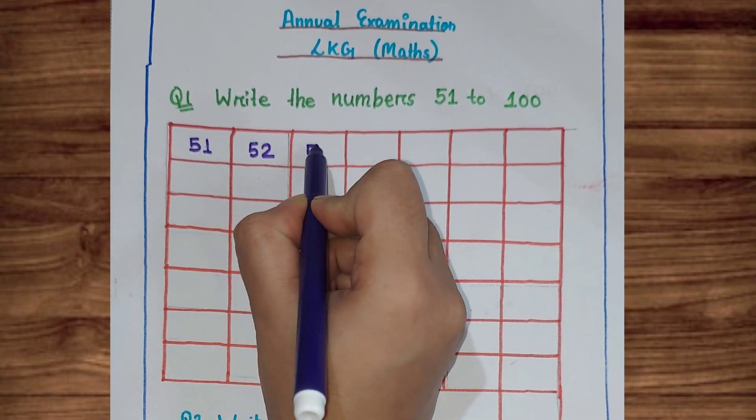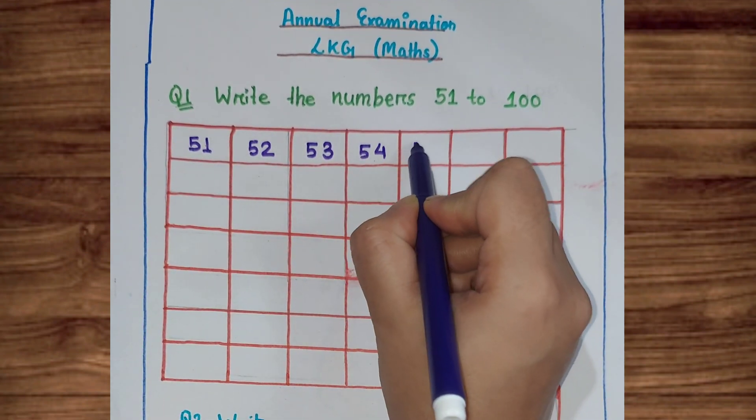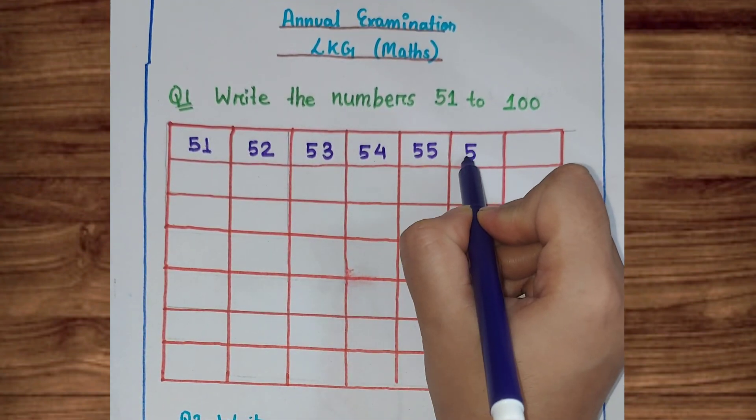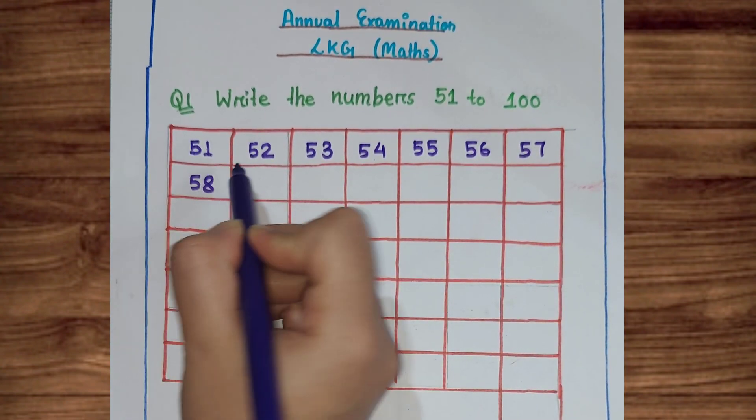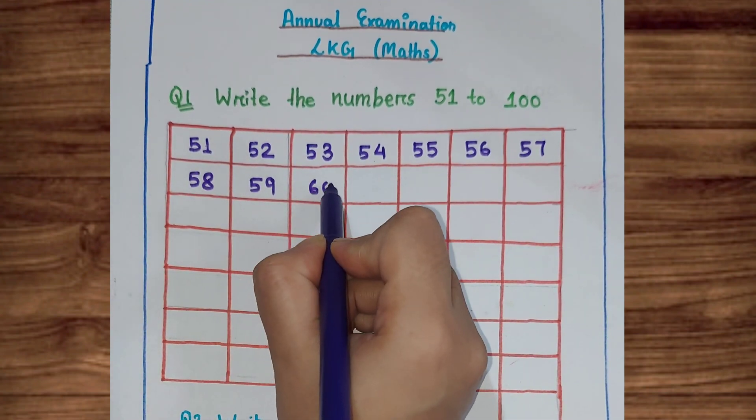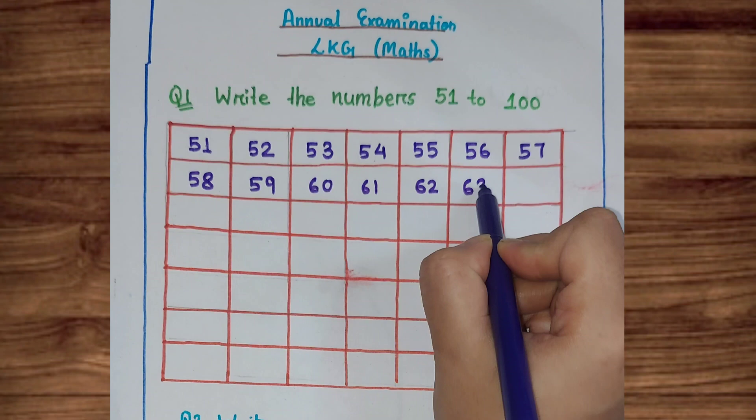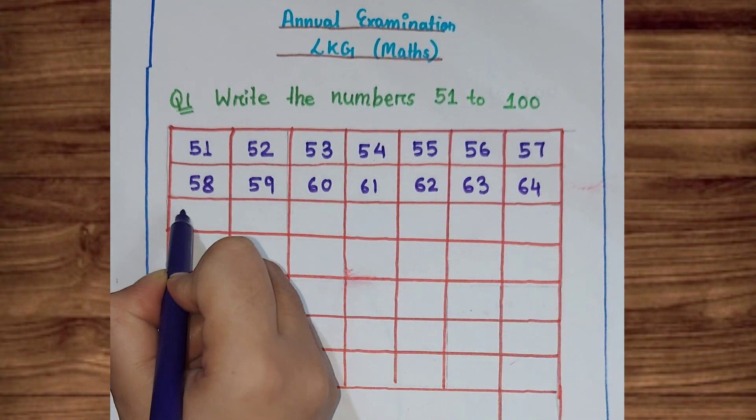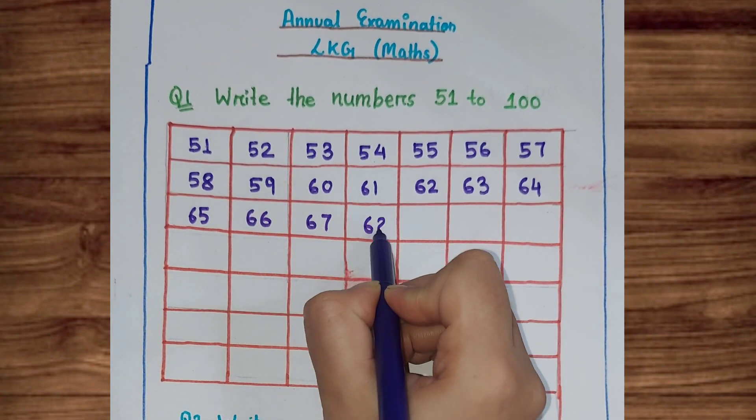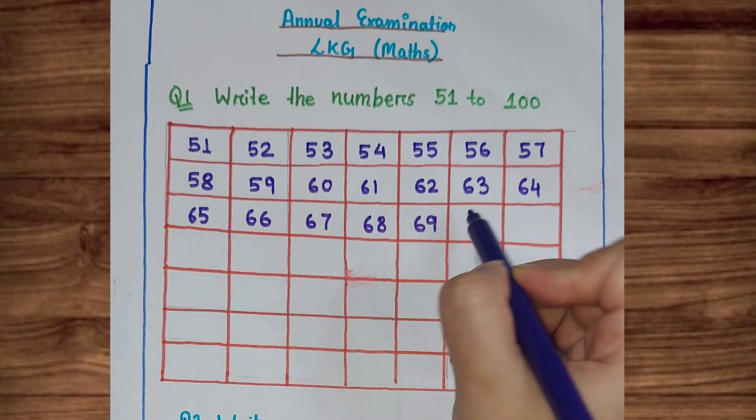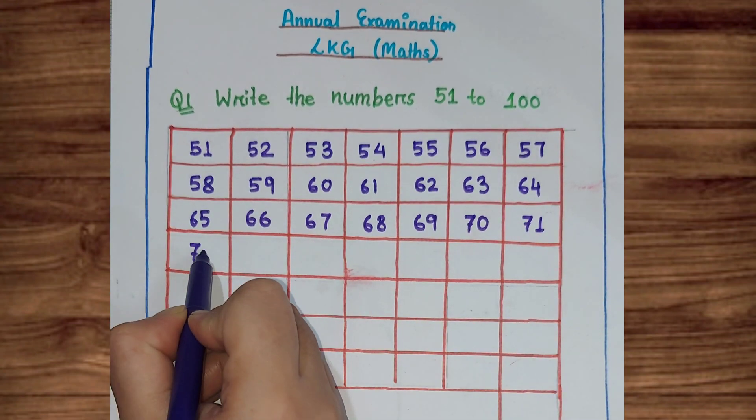53, 54, 55, 56, 57, 58, 59, 60, 61, 62, 63, 64, 65, 66, 67, 68, 69, 70, 71, 72.